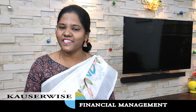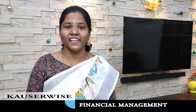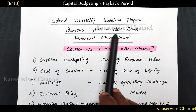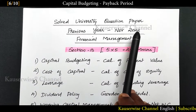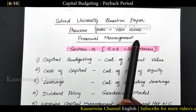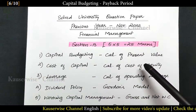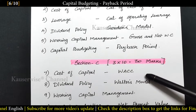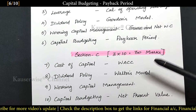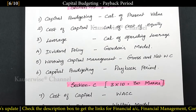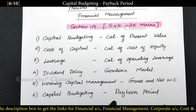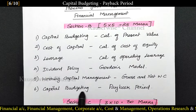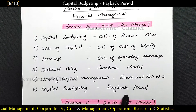Hi, welcome to my channel. This is Kouser Weiss and this is the continuation video of solving previous year university question paper, that is November 2022 financial management. In this video, we are going to solve Section B 5-mark questions and Section C 10-mark questions. You can find the playlist link in the description box. We are going to solve Section B payback period method under capital budgeting. Now let us get into the video.